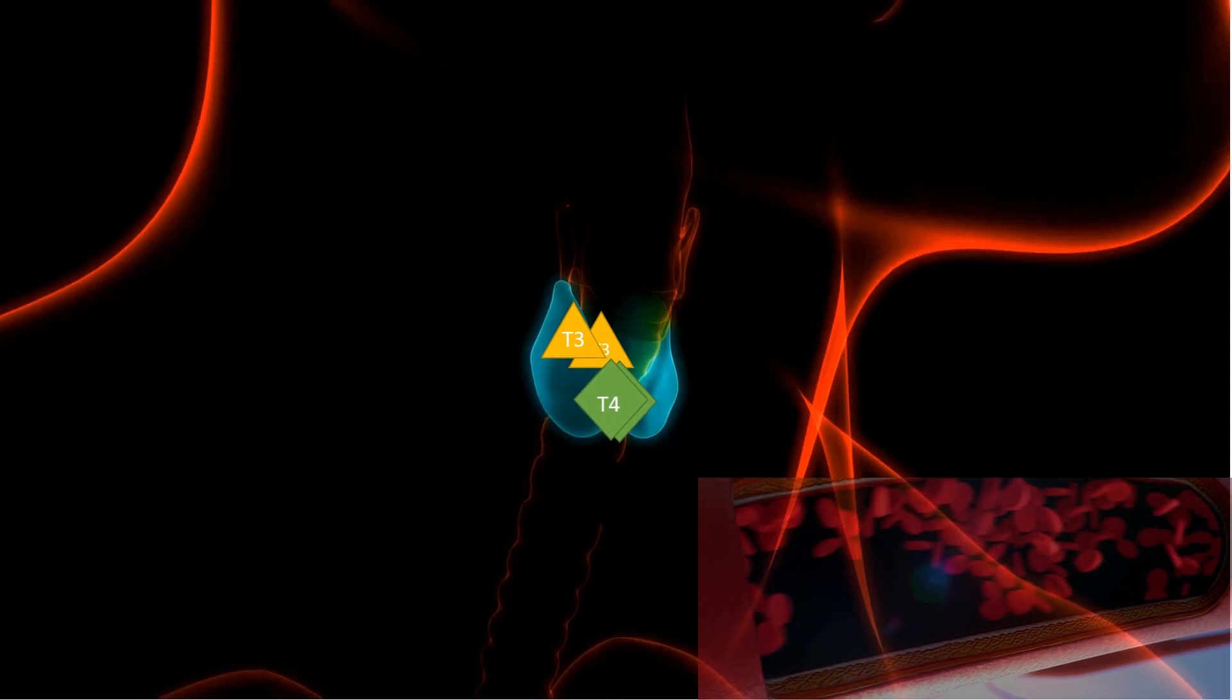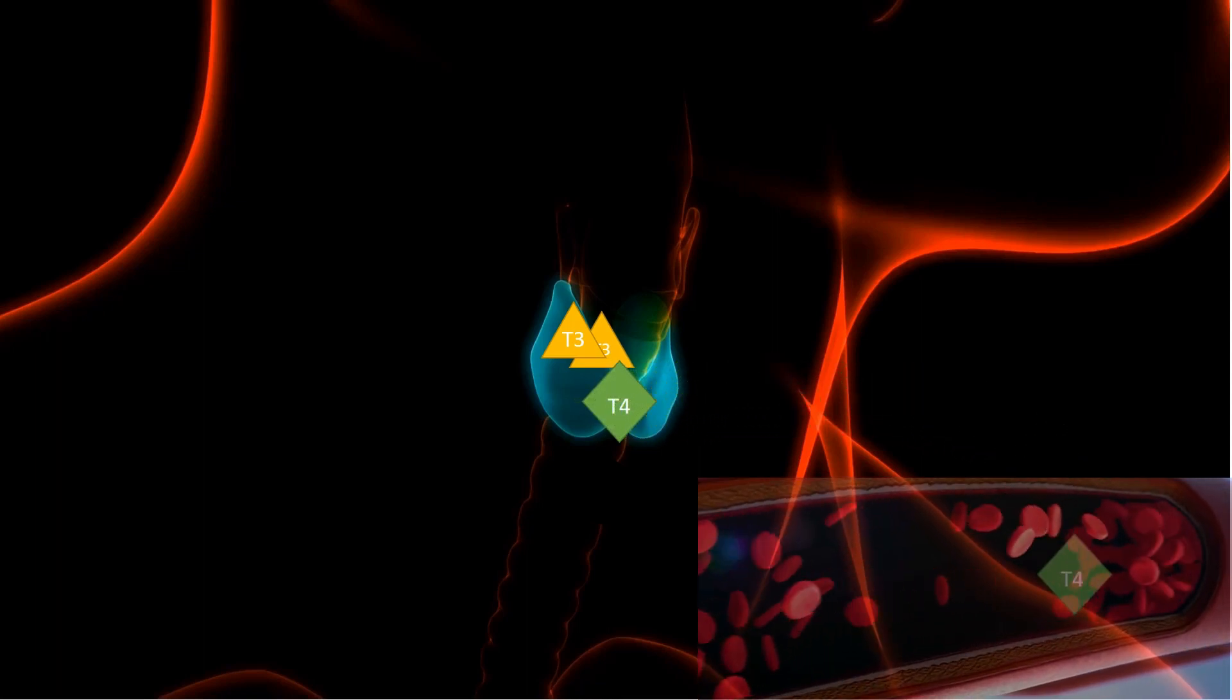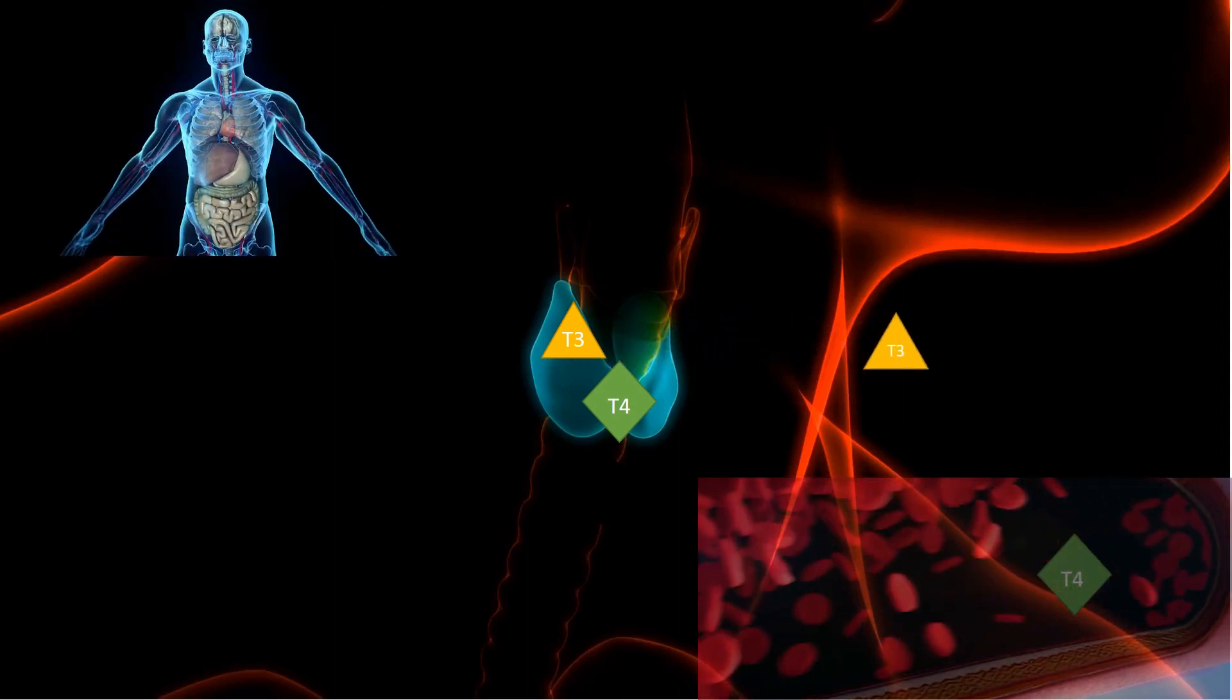The thyroid gland produces two main hormones, T3 and T4, which are involved in the regulation of the body's metabolism.